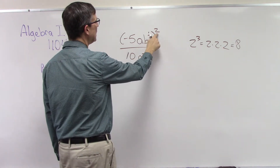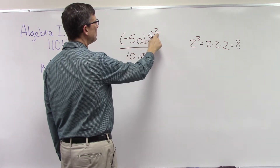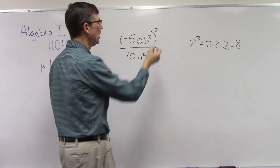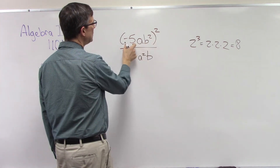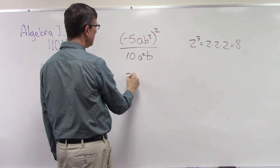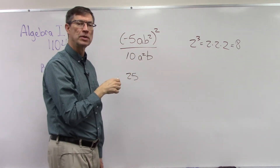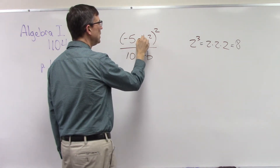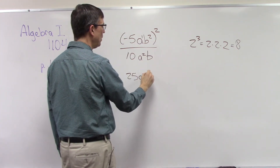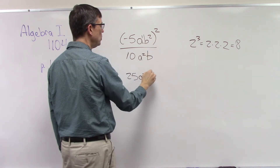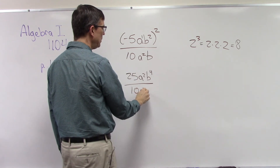We're going to take the exponent two and apply it to all of the things on the top here. It's almost like the distributive property — it's being distributed to each of these things. So it is being distributed to the negative five, which makes it positive 25. There's no exponent on the a — notice that — but we can assume it's an exponent of one, so multiplying two times one gives us a to the second power, b to the two times two — the fourth power.